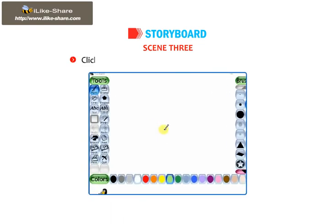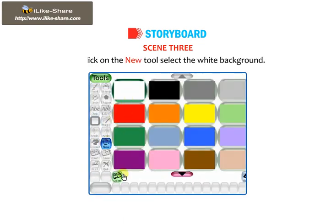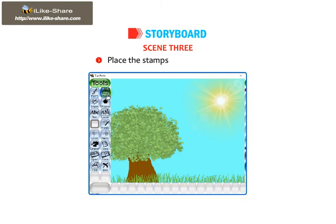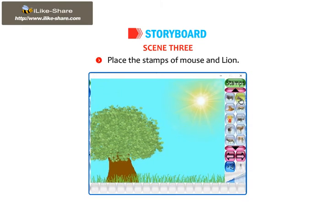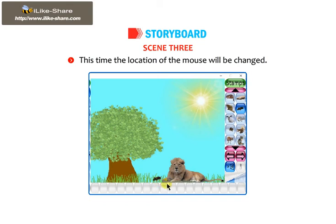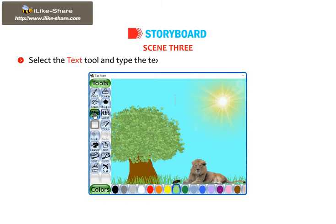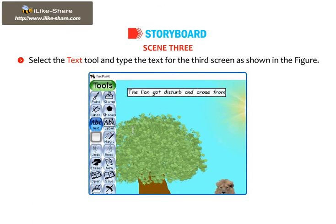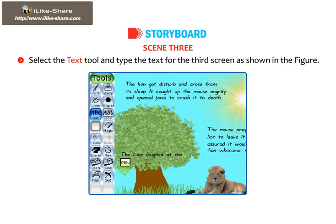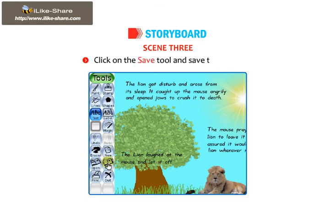Scene 3: Click on the New tool, select the white background. Create the same background as you have created in Scene 2. Place the stamps of Mouse and Lion. This time, the location of the mouse will be changed. Select the Text tool and type the text for the third screen as shown in the figure. Click on the Save tool and save the drawing.